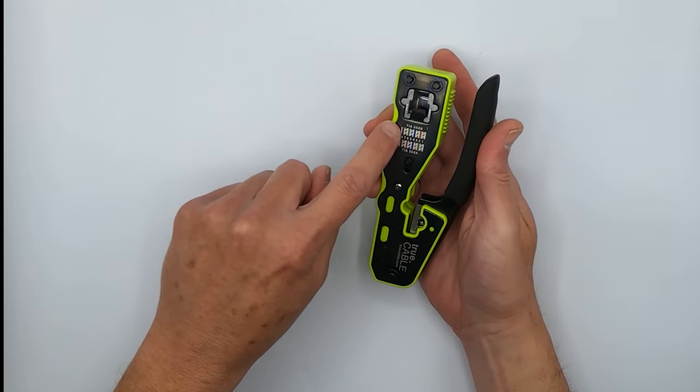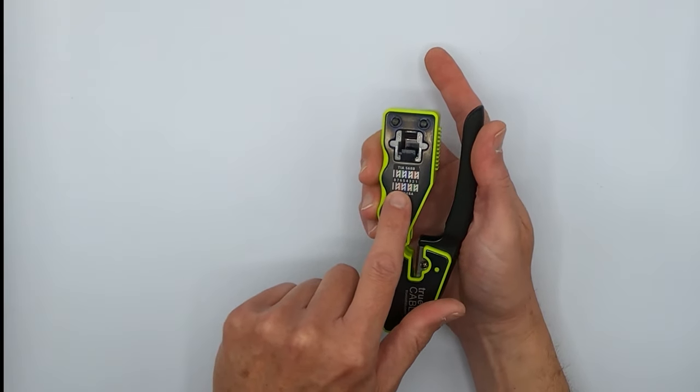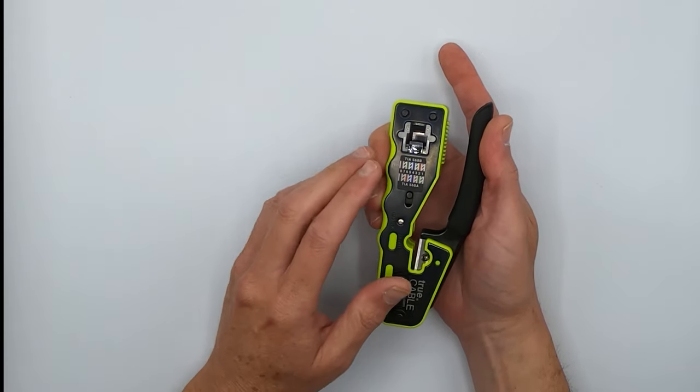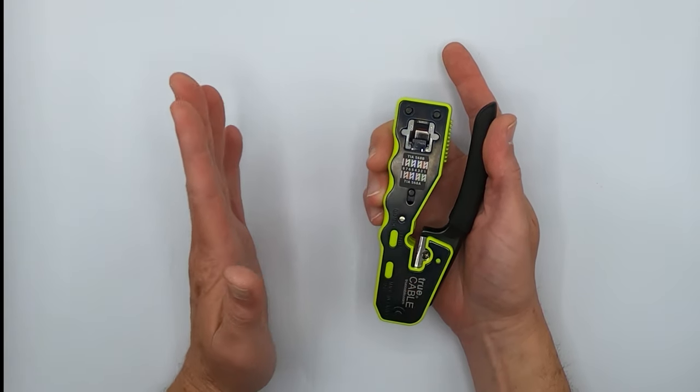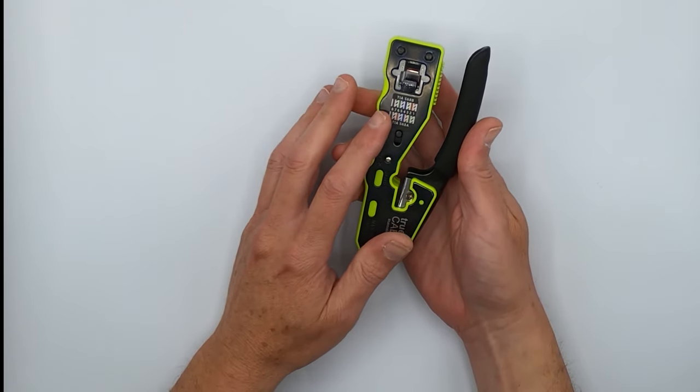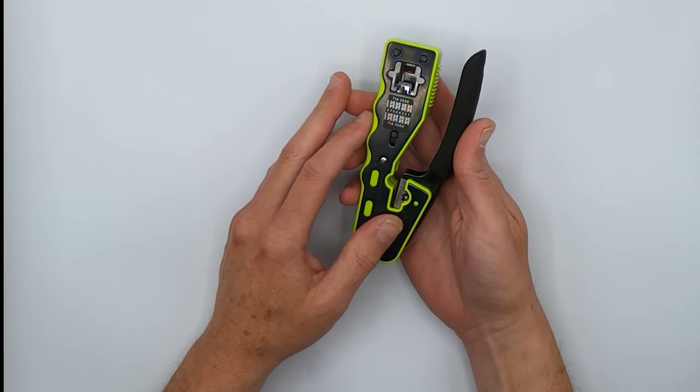On here you also have the T568A or B sequence so you can match up your colors with your plug to make certain you're getting termination correct. Even professional installers need to occasionally reference back to the standard. We all have those days and moments.